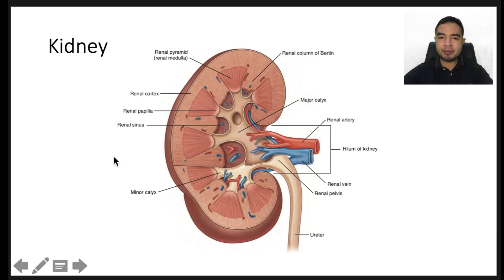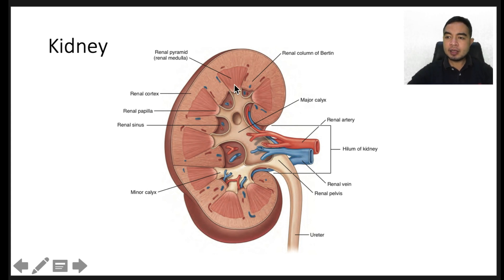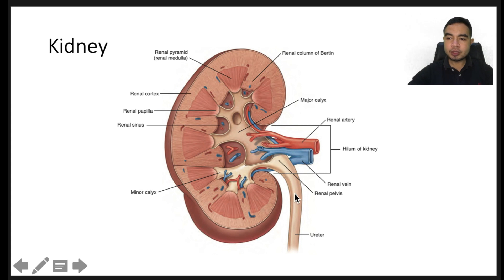The collecting system begins as a minor calyx near the renal papilla and then coalesces into a major calyx. The major calyces join to form the renal pelvis, which then tapers down to the ureteropelvic junction, from which the ureter emanates. The pelvis is located posterior to its respective renal artery.